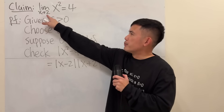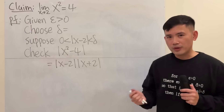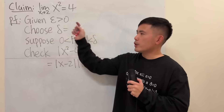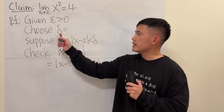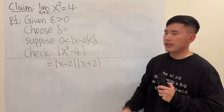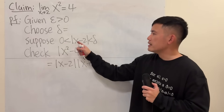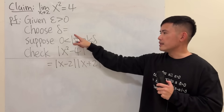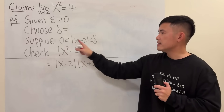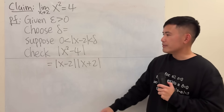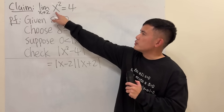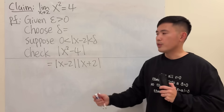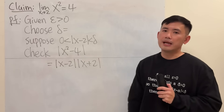Let's prove the limit as x approaching 2 of x squared is equal to 4. You know the four usual steps: given, choose, suppose, check. We start with: given epsilon greater than 0, we have to choose delta — but we don't know what it is yet, so I'll leave it blank. Then we suppose that the distance between x and 2 is between 0 and delta, using absolute value, and make sure you have strict less than. At the end, we have to make sure the distance between the function and the limit — absolute value of x squared minus 4 — is less than epsilon.